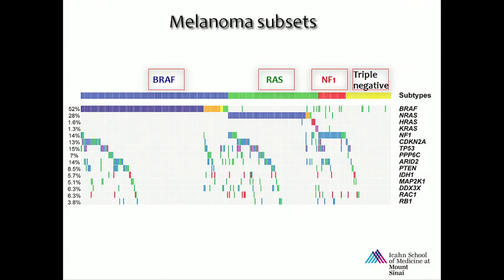This is a recent TCGA initiative led by Dr. Chin, published in Cell. When we look at 400 melanomas that have been sequenced at the DNA level, we have about 52% with a BRAF mutation and 28% with a RAS mutation.